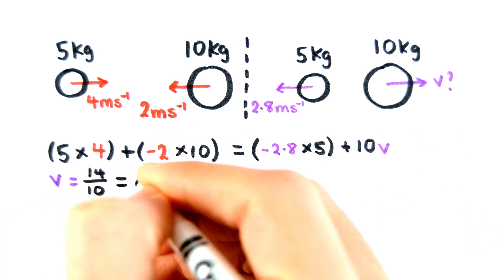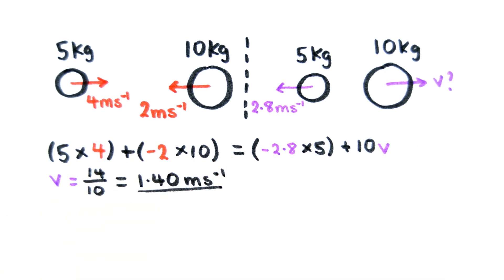Using conservation of momentum here, we can work out the velocity of the second particle to be 1.4 meters per second.